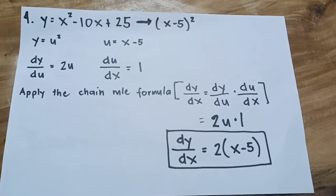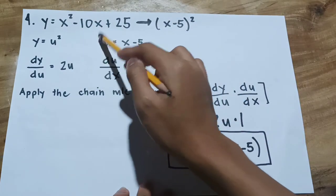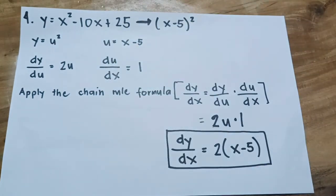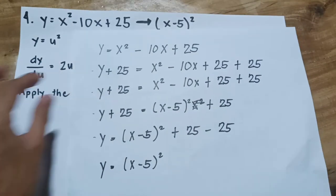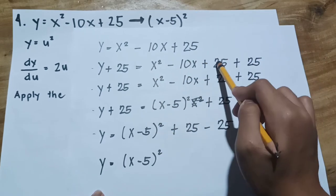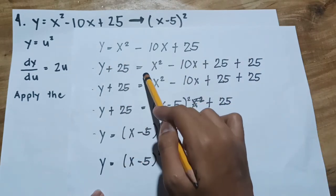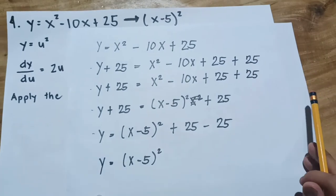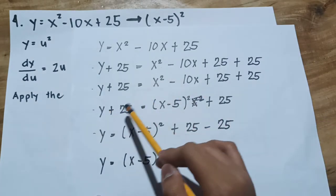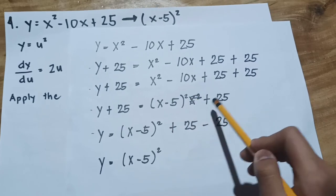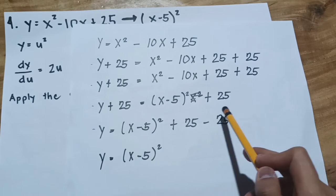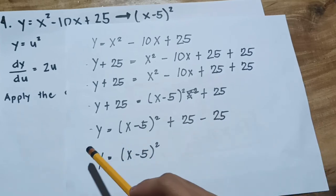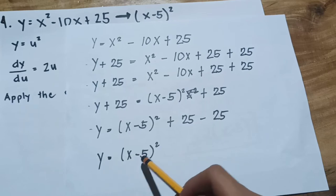Example number 4: Suppose we want to differentiate y = x² − 10x + 25. As you can see, there is no inner and outer function here, so we need to factorize first, then substitute. Starting with y = x² − 10x + 25, we factor the expression. After factoring, y + 25 = (x − 5)² + 25. Eliminating the opposites gives us y = (x − 5)². So the factorized answer is y = (x − 5)².